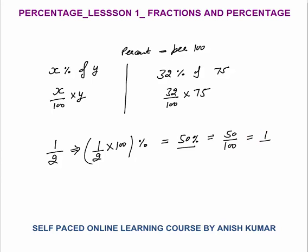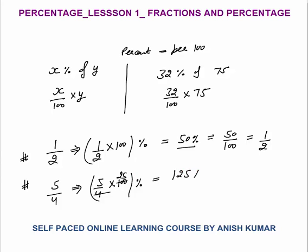Very important: any number you want to convert into percentage, just multiply by 100. For example, 5 by 4 into 100 equals 125 percent. Again, if you want to open the percent, divide by 100. So whenever percentage is given to you, divide by 100; whenever any fraction or number is given, multiply by 100 to get the percentage.